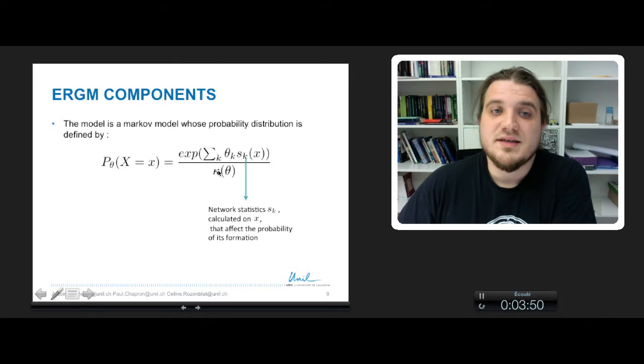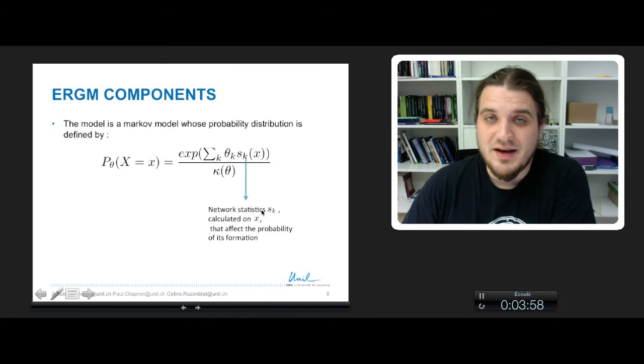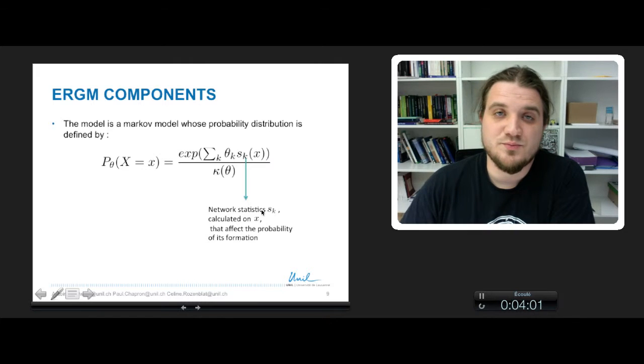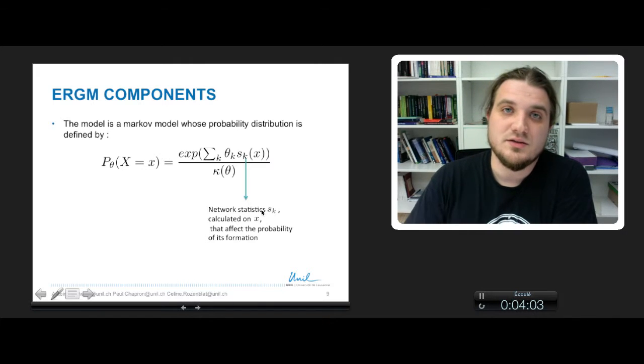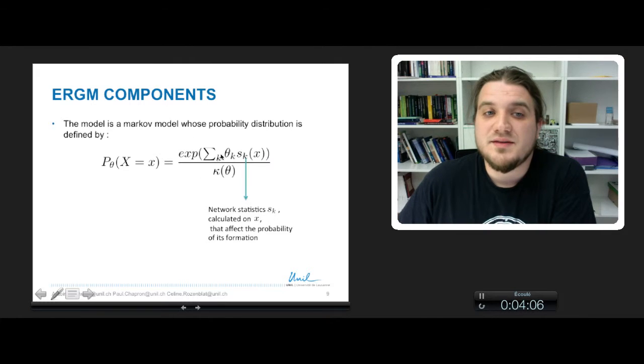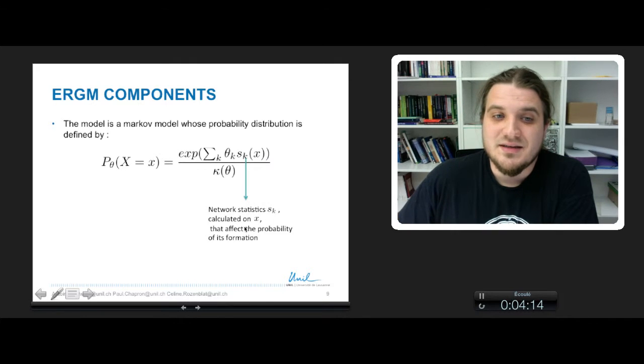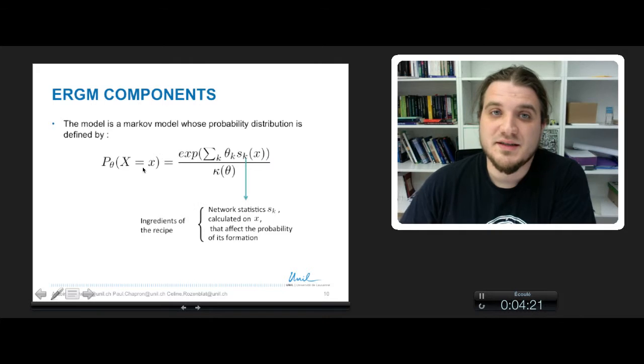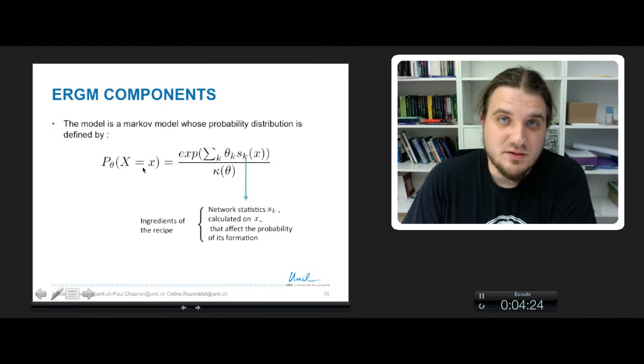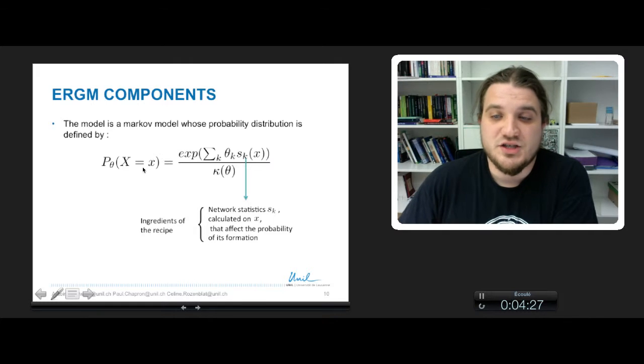So inside this probability expression, sk is the network statistics k. So it's an element that describes the structures, that describes the effect of something on the structure of the network. And we have several network statistics. We have k statistics. And these statistics affect the probability of the formation of the links of the network. In fact, these statistics are the ingredients of the recipe we are looking for in ERGM.